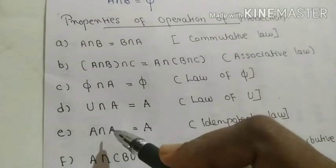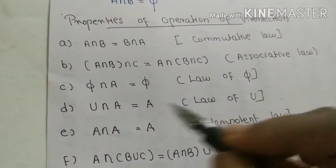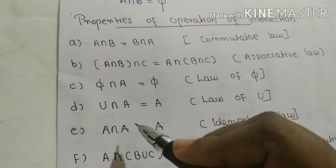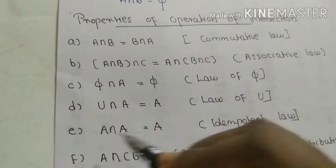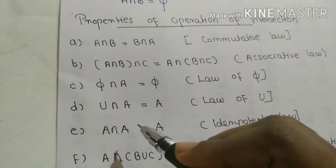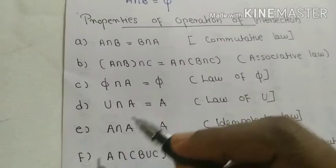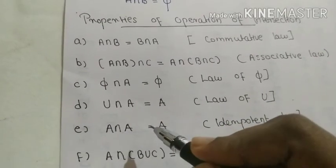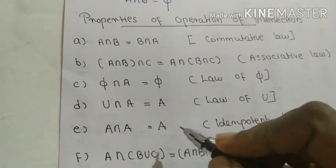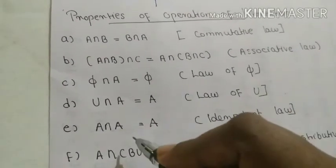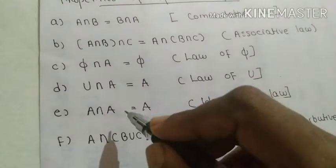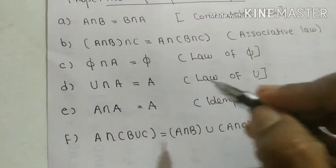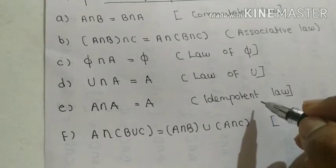The fifth property is the idempotent law: A intersection A is equal to A. The elements common to both set A and set A are simply A itself. So A intersection A equals A, and this law is known as the idempotent law.